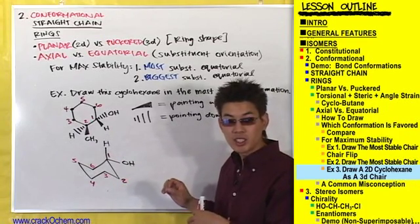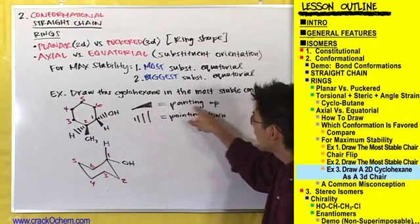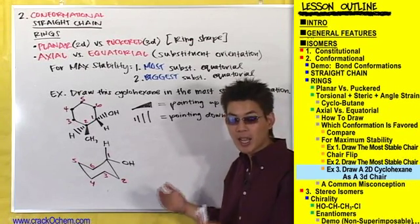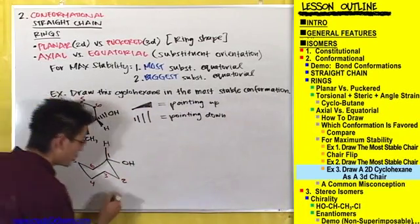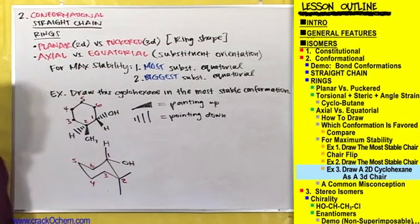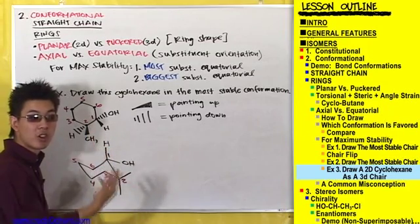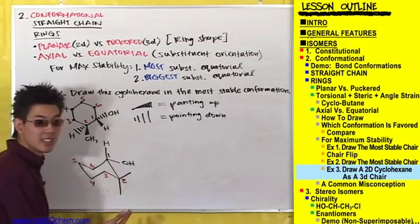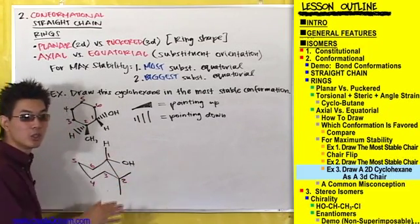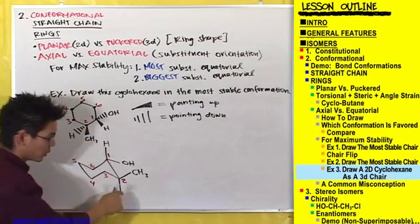Now let's do carbon number two. There is a wedged CH3 on carbon number two, and we assigned a solid wedge to mean the substituent is going to be pointing up on our chair. Drawing out the axial and equatorial bonds for this carbon, the axial is going to be pointing straight down, and the equatorial bond is pointing slightly up and to the right. Since it's a wedged CH3 pointing up, we put the CH3 on the equatorial bond pointing slightly upward. And the hydrogen with the dashed wedge goes on the axial bond pointing downward.